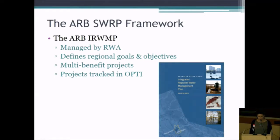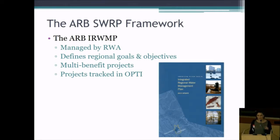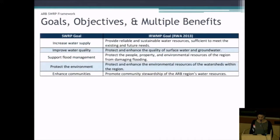The framework for the stormwater resource plan is already outlined in the IRWAMP, which serves as a great backbone. It's managed by the Regional Water Authority, who've been a prime component in developing the stormwater resource plan. They have defined regional goals and objectives, include multi-benefit projects, and have an online planning tool — the Information Center. The goals from the IRWAMP tie exactly to the multiple benefits we're trying to achieve through stormwater as a resource.